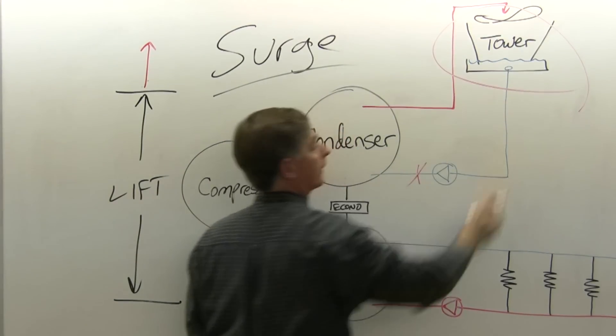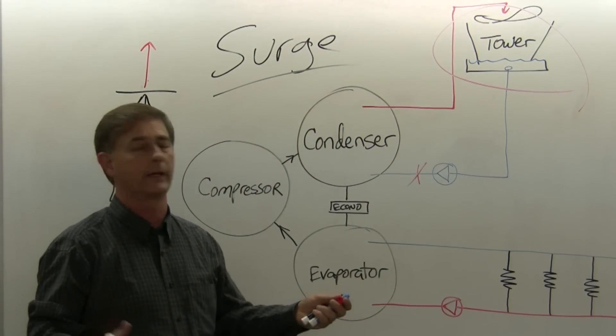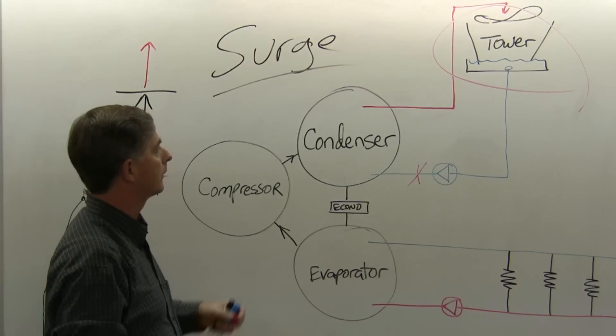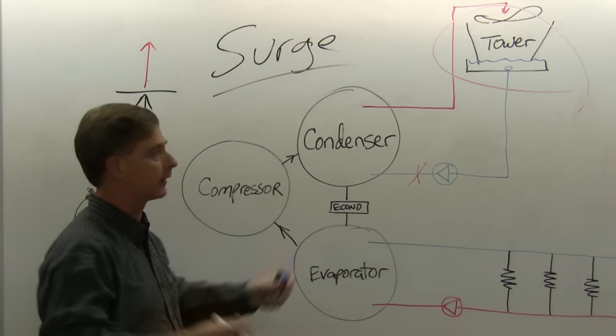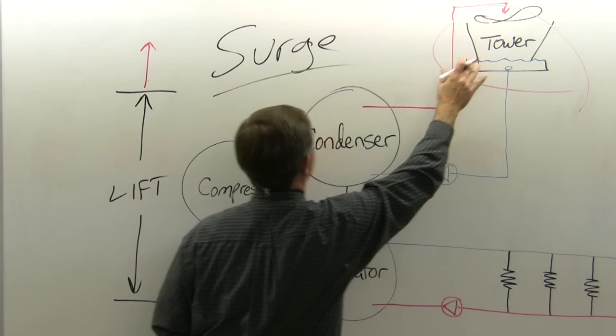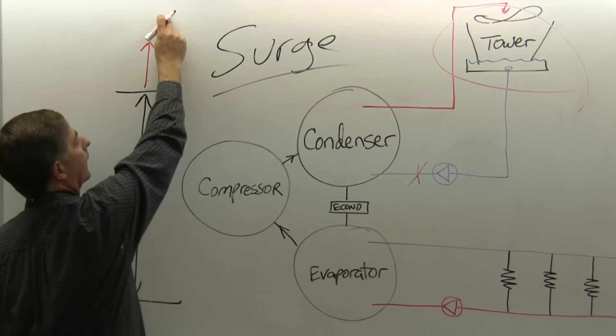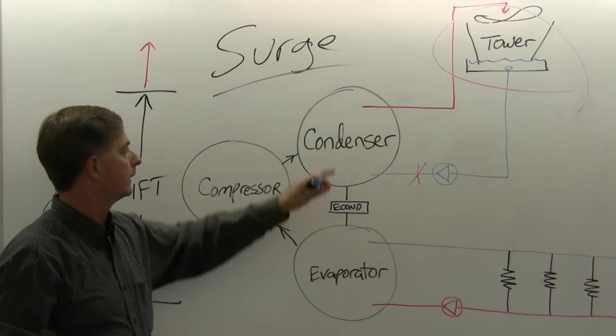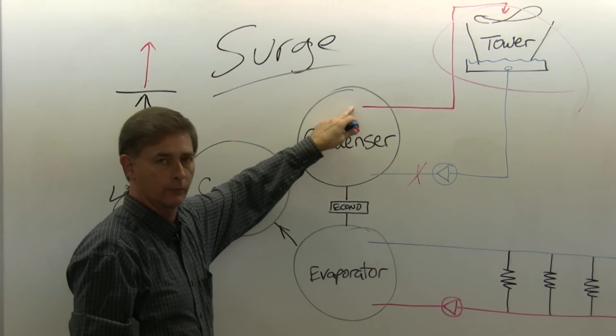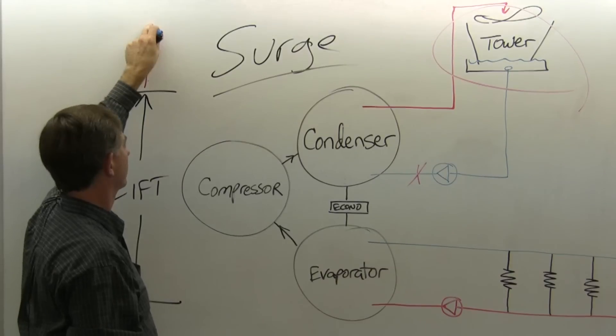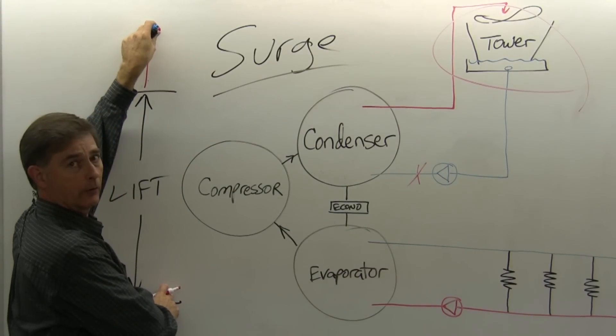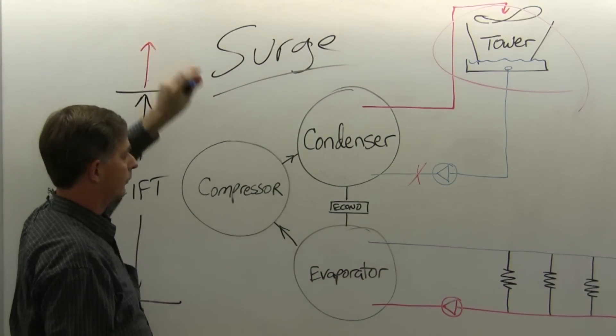Same thing, tower fan. If a fan belt breaks or transmission malfunctions or something like that, and that fan stops, you will very quickly reach a high temperature, corresponding to a high pressure, corresponding to a very large lift, you will surge.